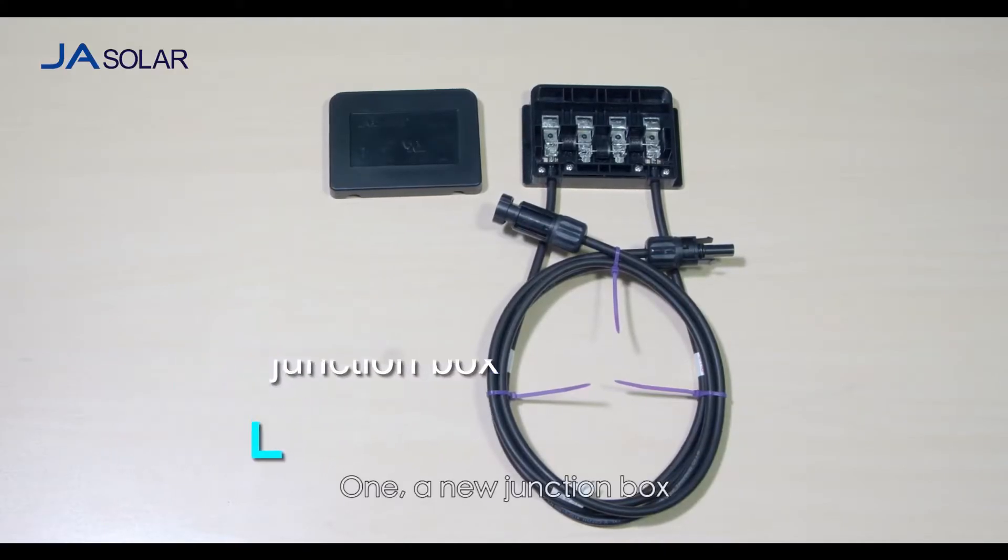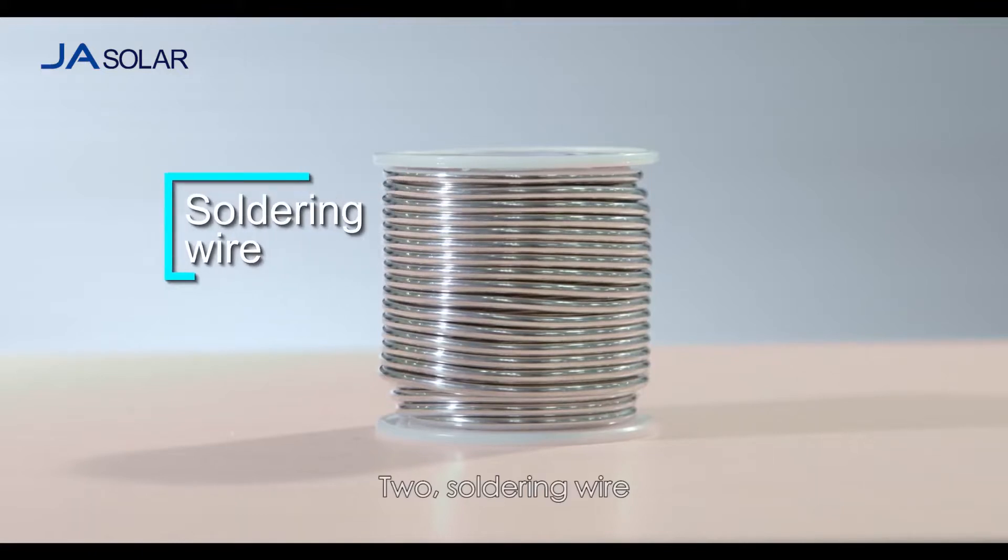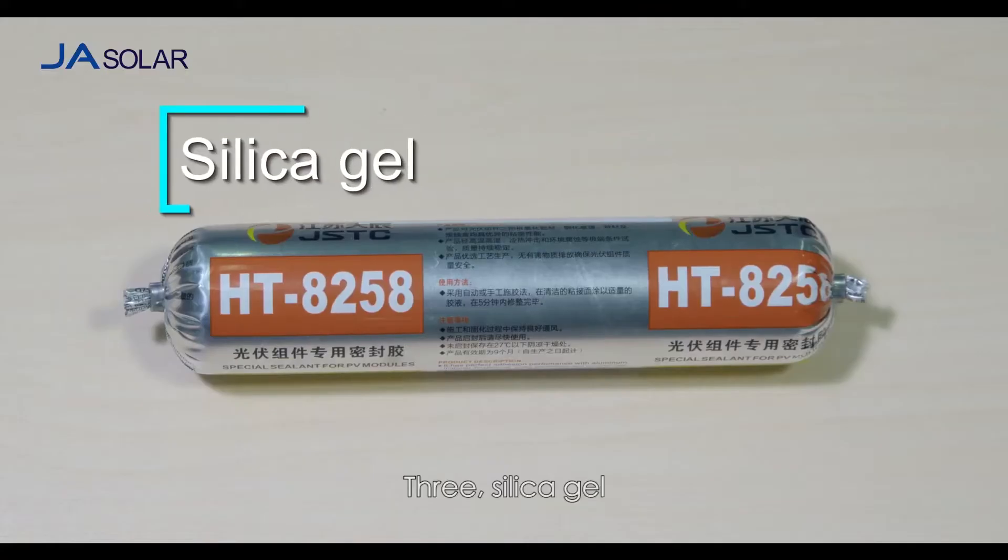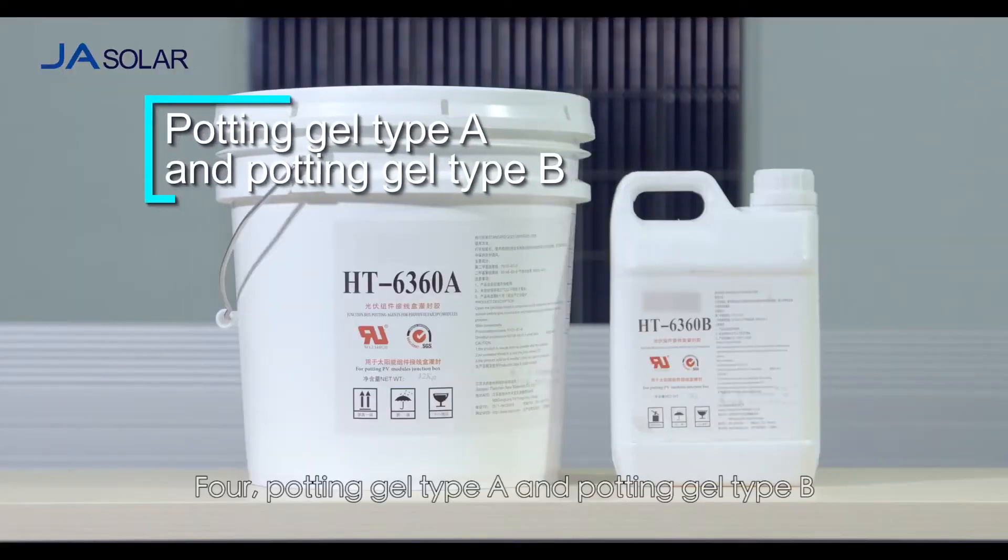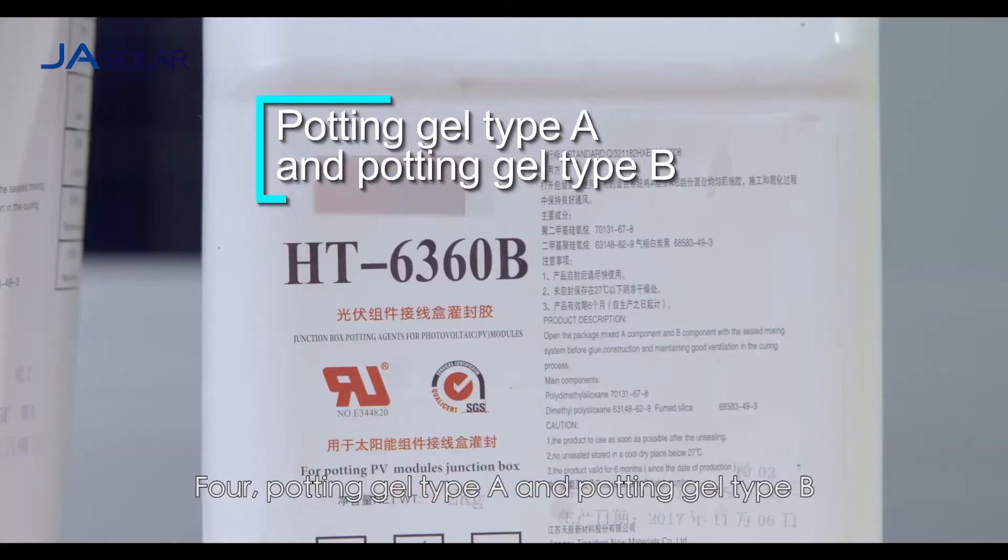First, a new junction box. Second, soldering wire. Third, silica gel. Fourth, potting gel type A and potting gel type B.